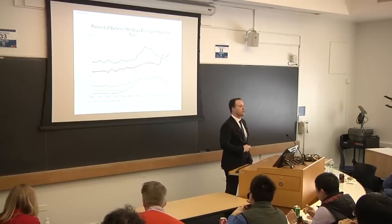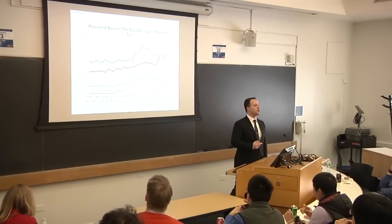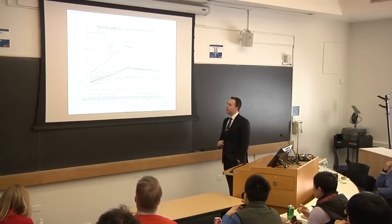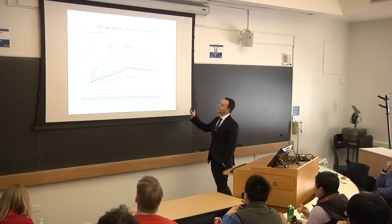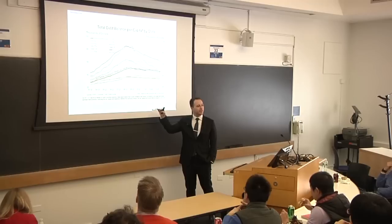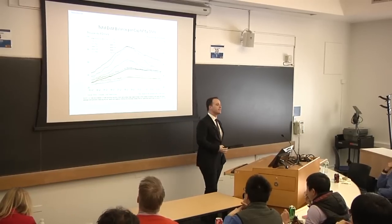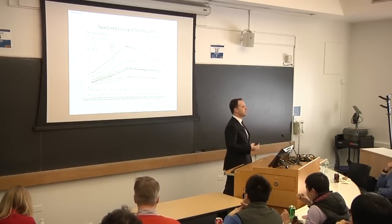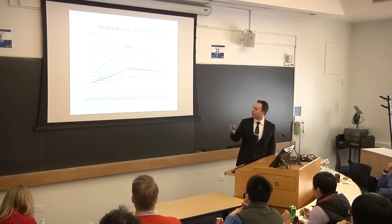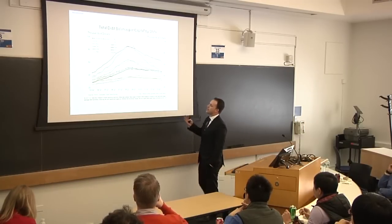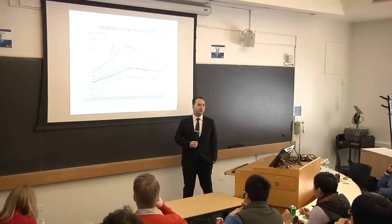However, not all the US are going to be equal. This is the total debt balance by different states. We see that the ones most hit by the boom and bust in terms of credit are Nevada, California, New Jersey, Arizona, and so on.